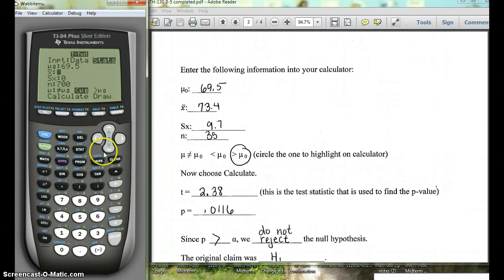Now our mean that we were given was 73.4, so we're going to put that in for the mean, and the standard deviation was 9.7. And we were told they looked at 35 symphony conductors, so we'll put in 35. And this was a greater than claim, so we're going to use the greater than symbol.